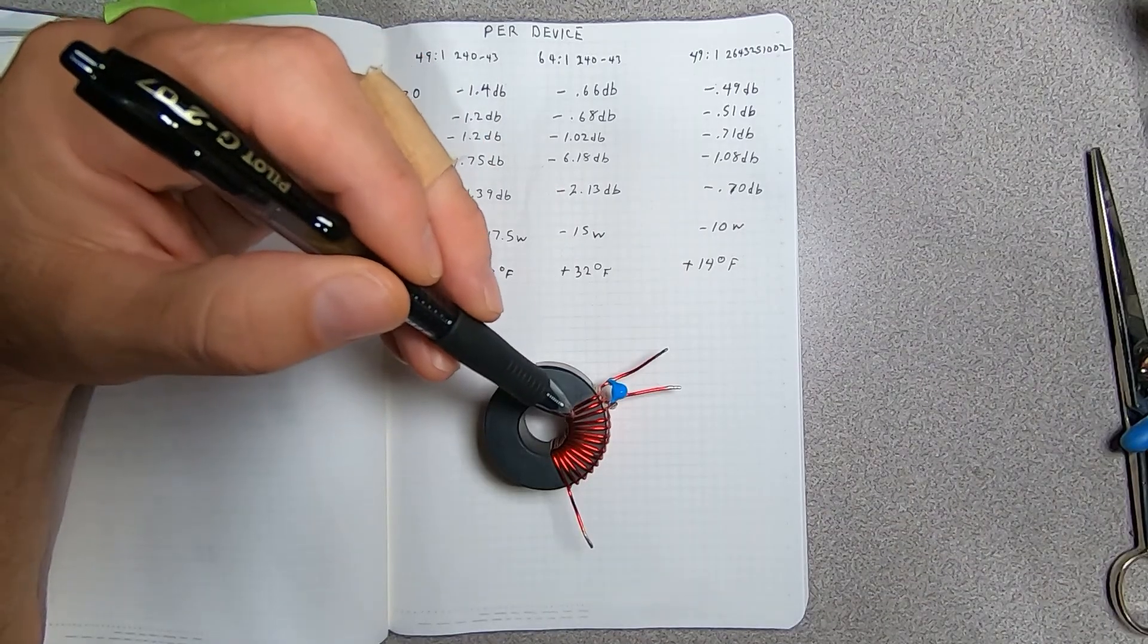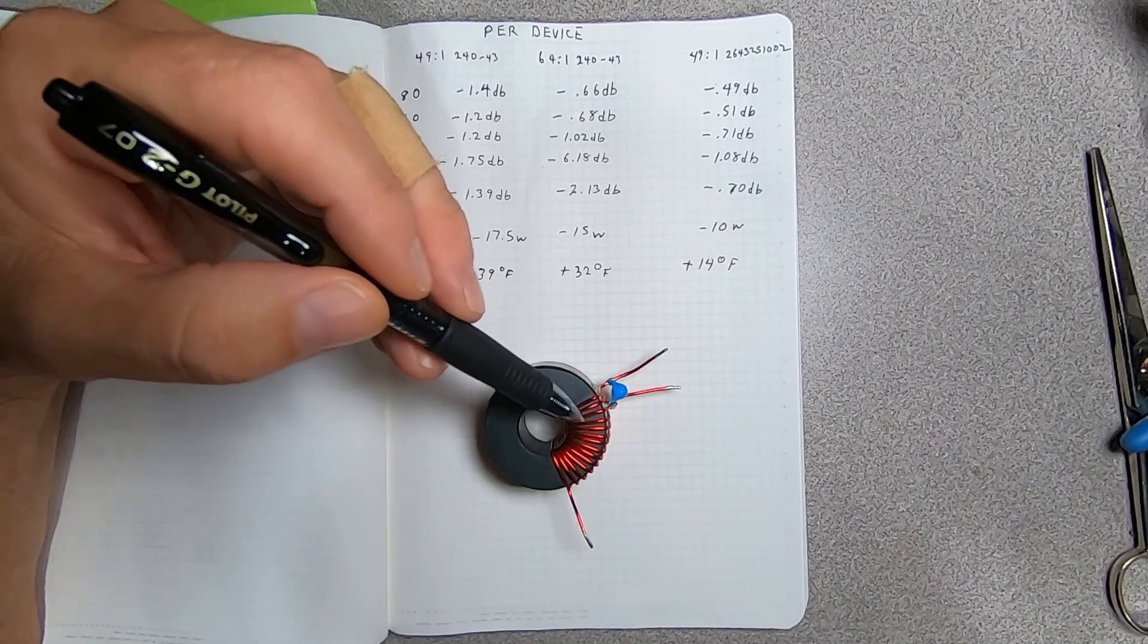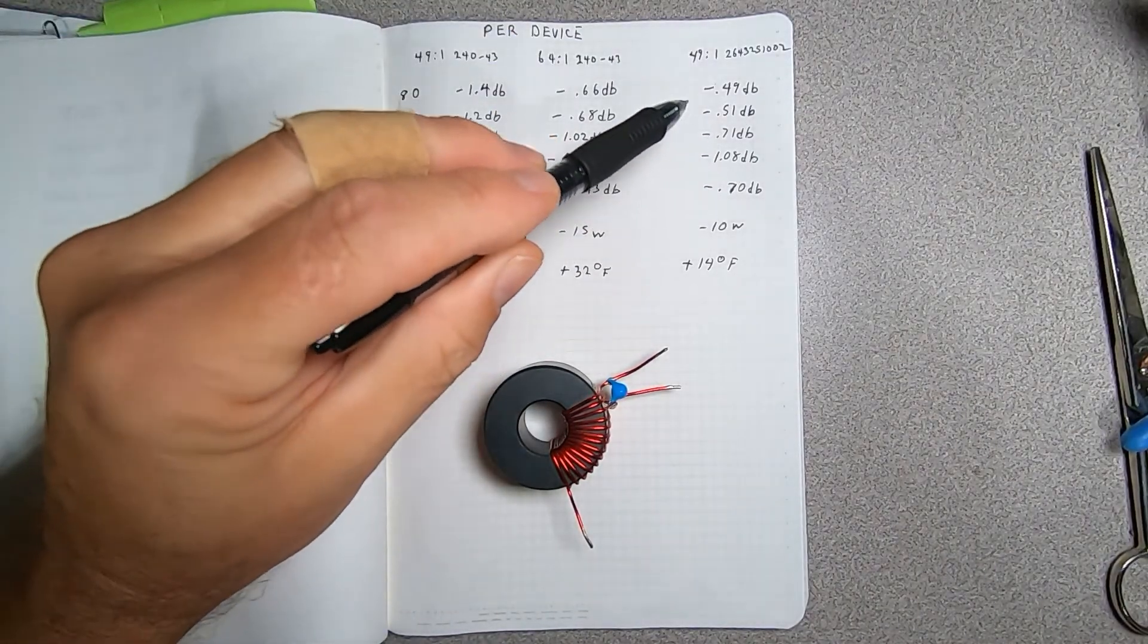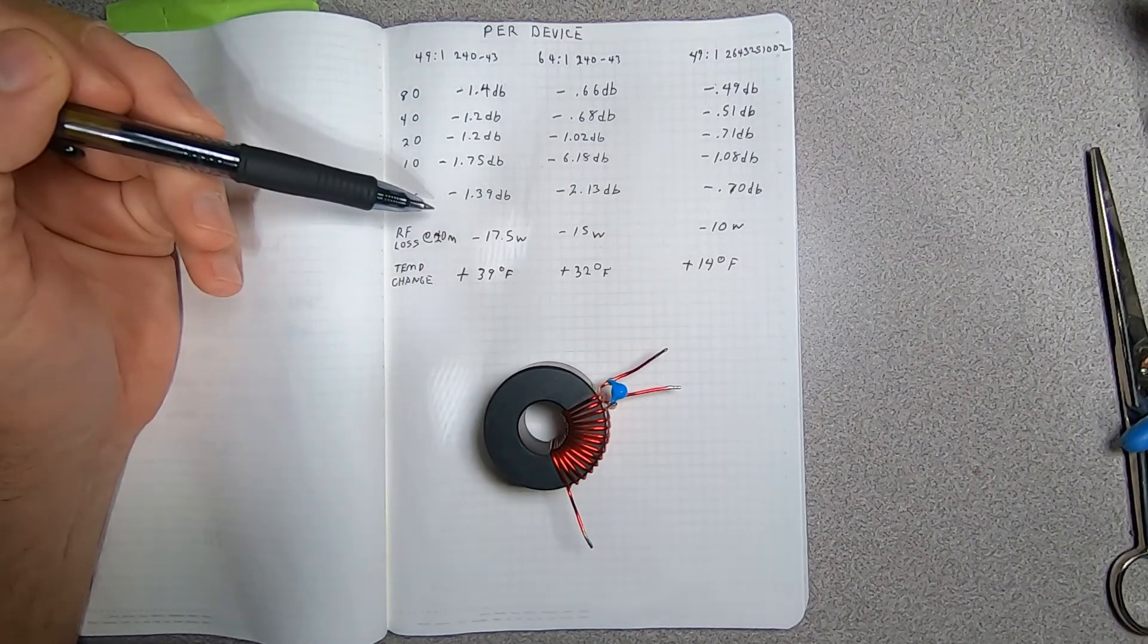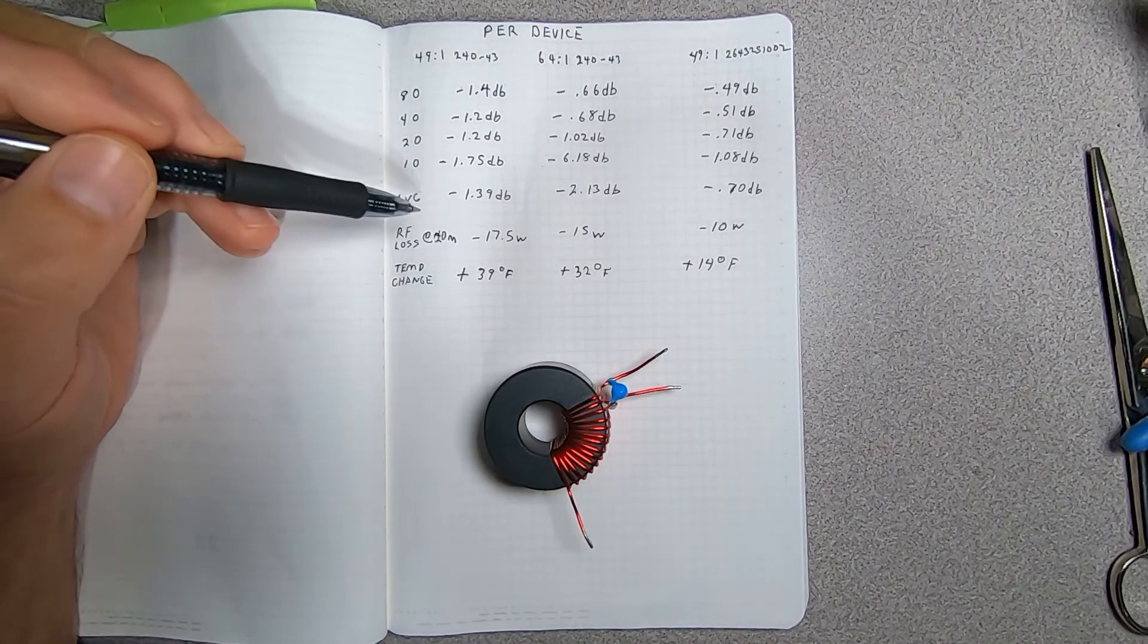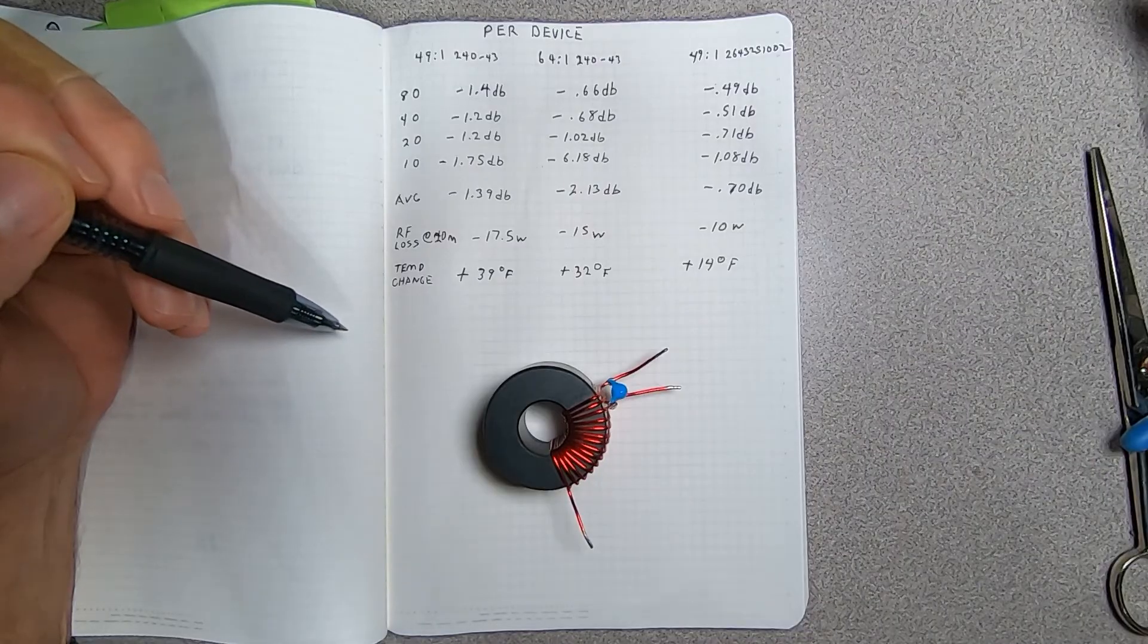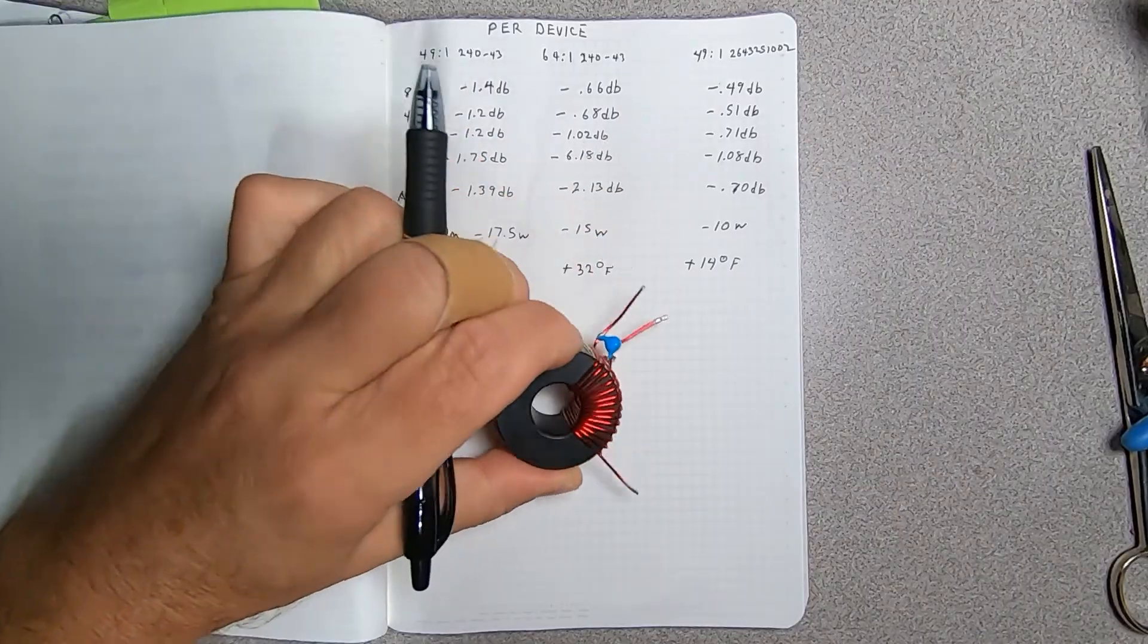One thing, if you looked at the thermal on this particular transformer, is that all of your heat is concentrated right here in the area of the windings. So the Cliff's notes on this entire experiment is that this transformer here has half of the loss of our conventional 49 to 1 wound on an FT-240-43, which is good. And it's not tremendous. However, anything you can save by having a more efficient transformer is going to help you in the long run. So now we're going to talk about how you can build one of these yourself.